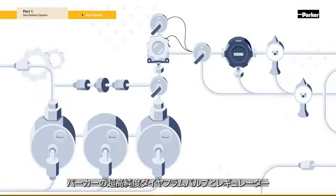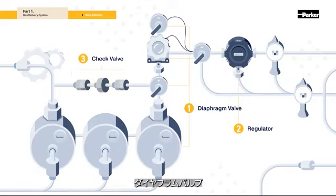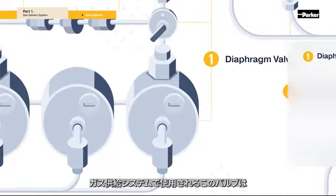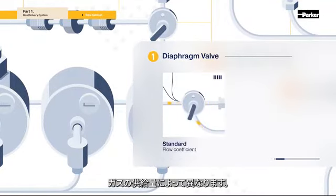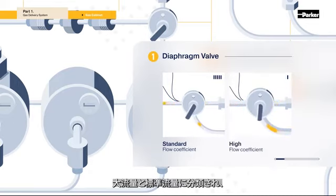Parker's ultra-high purity diaphragm valve, regulator, and check valve are used in the gas cabinet. The diaphragm valve, which is used in the gas supply system, depends on the supplied amount of gas. It is classified into high and standard flow capacity.